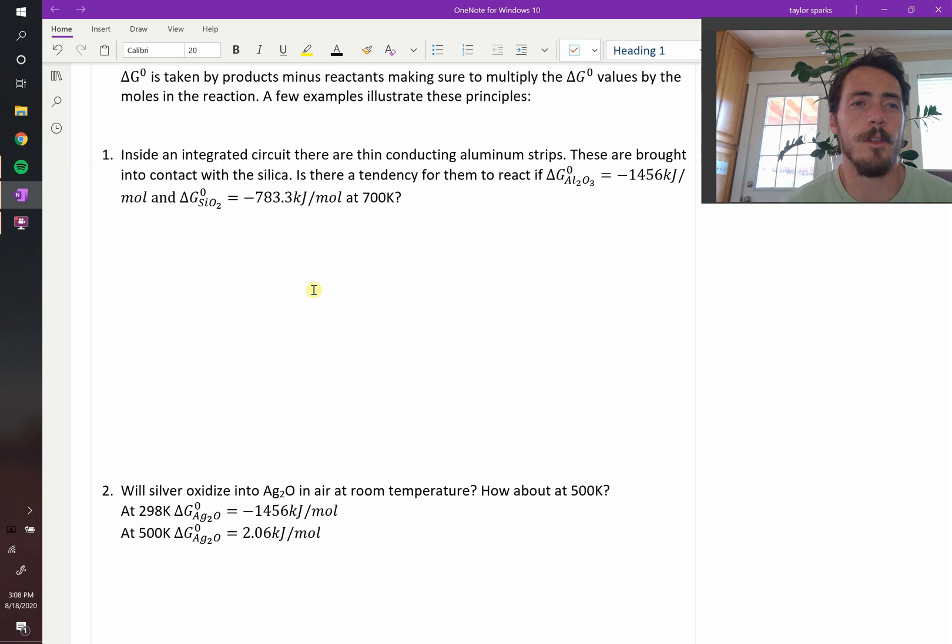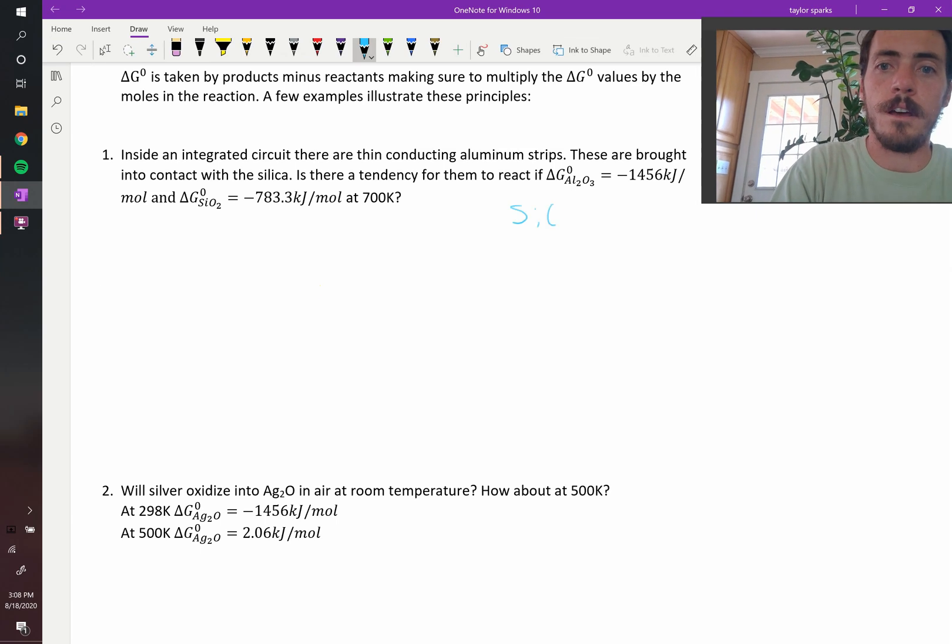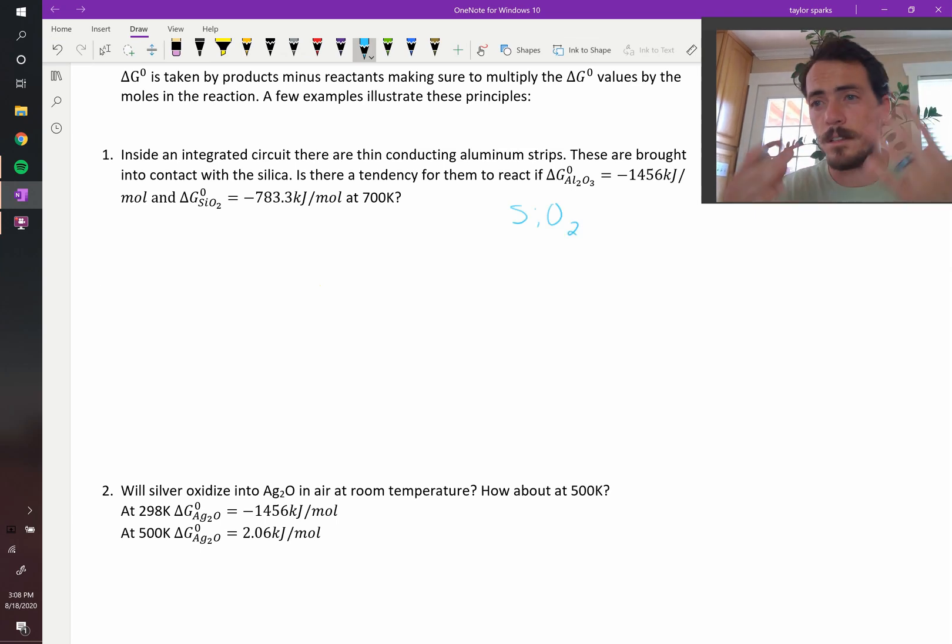The first question says the following: inside an integrated circuit are thin conducting aluminum strips. So inside your phone or your devices, this is how you connect electricity oftentimes with these little strips. So the question is, if these are brought in contact with silica, what is silica? Silica is SiO2, so silicon dioxide.